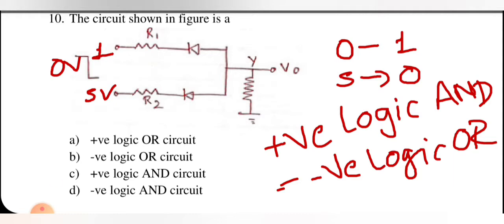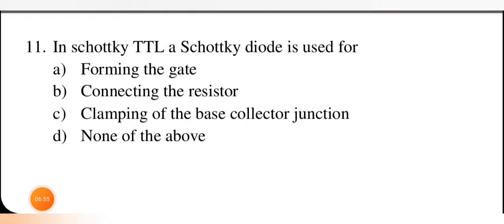A Schottky diode is used for clamping of the base-collector junction — that is the right option. It is used for clamping of the base-collector junction so that the transistor's speed is high, meaning the gate we have made will operate at higher speed.